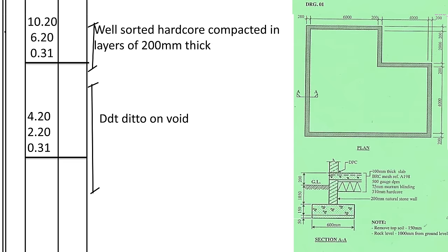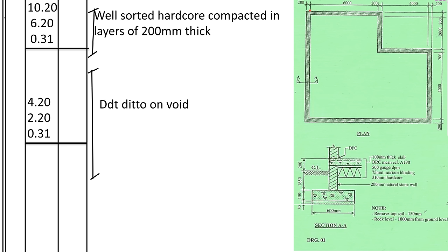The hardcore is laid inside the walls. We take internal dimensions: length = 6,000 + 200 + 4,000 = 10,200mm; width = 2,000 + 200 + 4,000 = 6,200mm; depth = 310mm. Then we deduct the void, where no hardcore is laid: length 4,000 + 200 = 4,200mm, width 2,000 + 200 = 2,200mm, same depth 310mm. Book as: internal dimensions × 0.31 depth, deduct void.